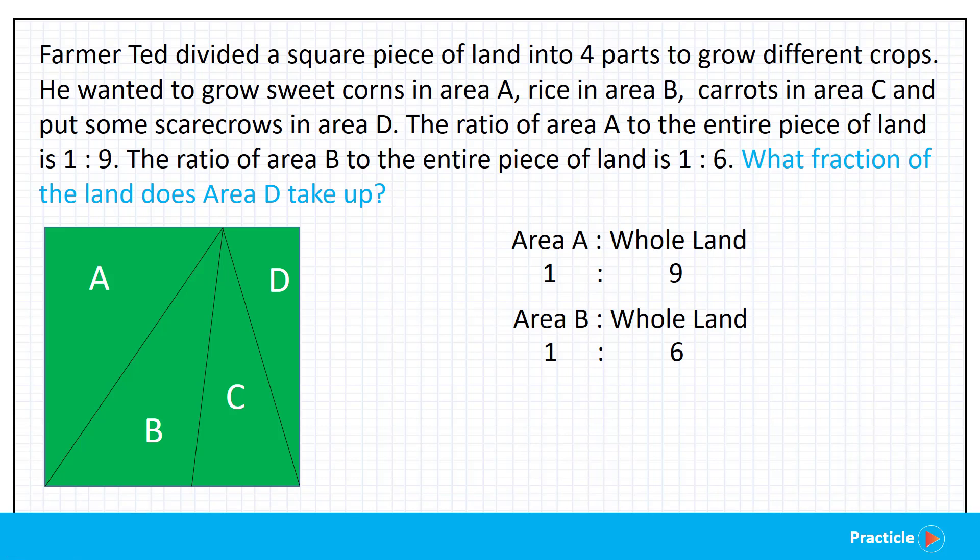Remember that we had something weird going on earlier on. We were given that the ratio of area A to the area of the entire piece of land is 1 is to 9, and the ratio of area B to the entire piece of land is 1 is to 6. Since the area of the whole piece of land should be the same in both cases, what do you think we can do to the ratios to show this? Well, I hope you said make 9 and 6 the same.